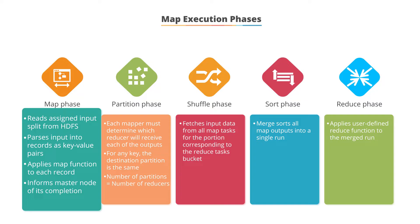They are sorted first by bucket number and then by key. At the end of the map phase, information is sent to the master node after its completion.